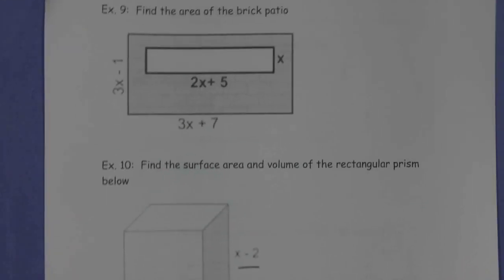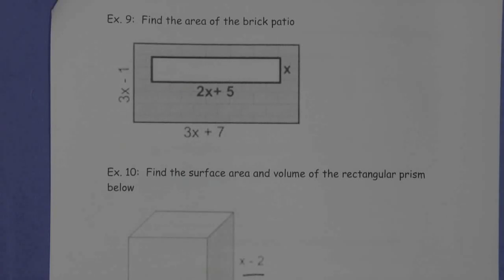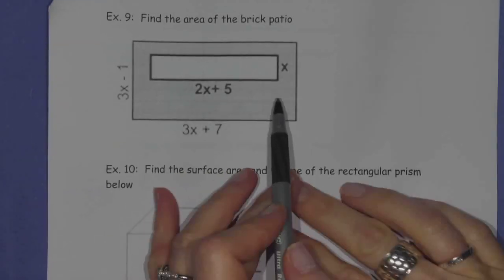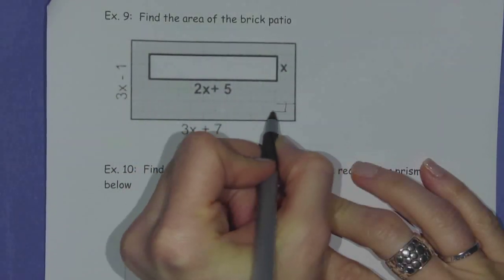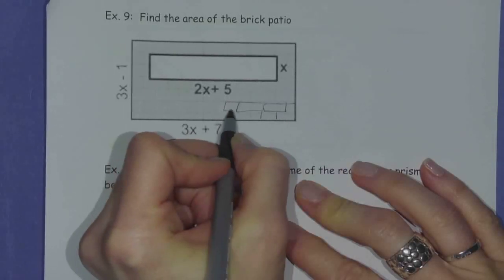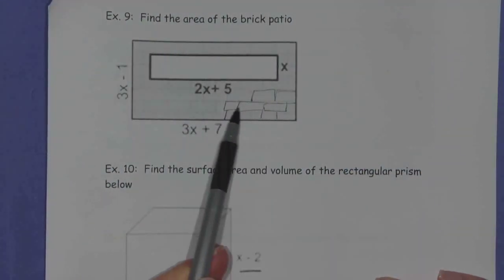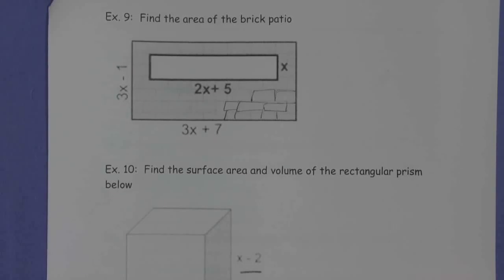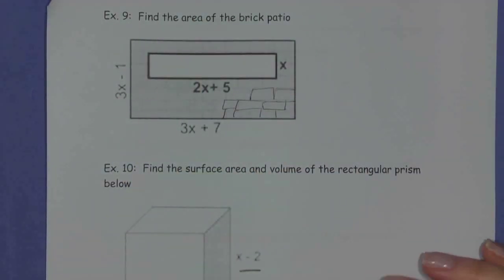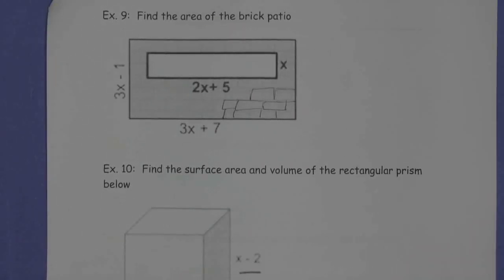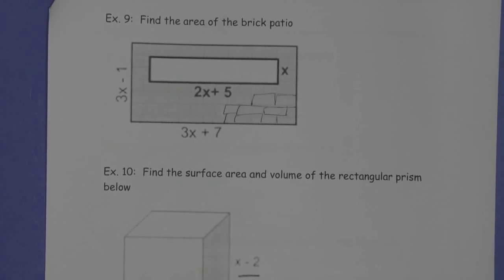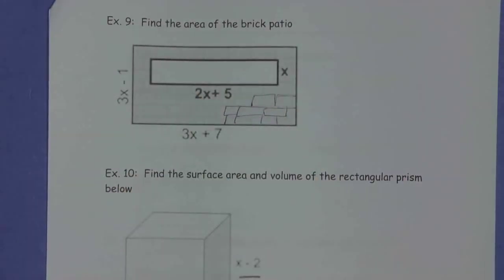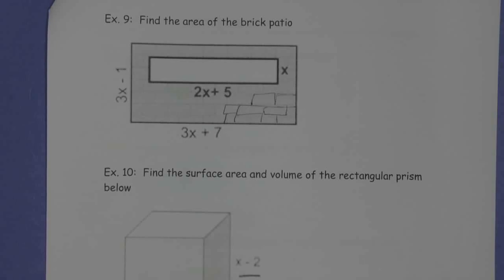Two to go. Let's move on to example nine: find the area of the brick patio. The brick patio is the grayish part — you can see the bricks right here. Go ahead and pause the video and think about this on your own, then come back when you think you have something that makes sense.